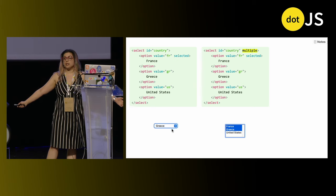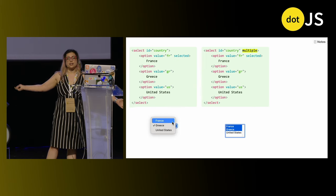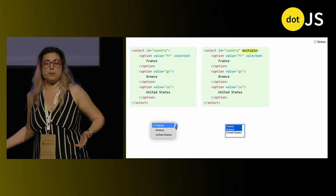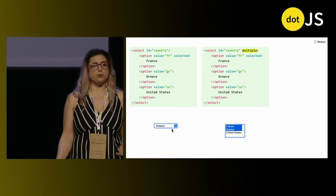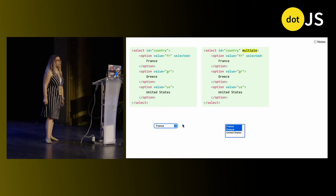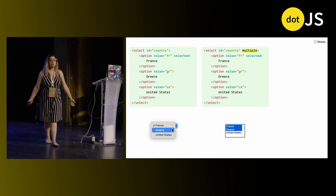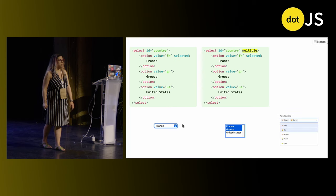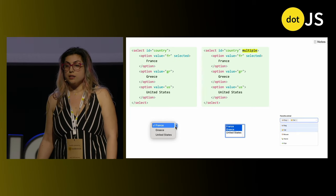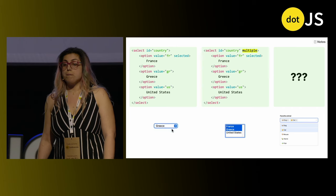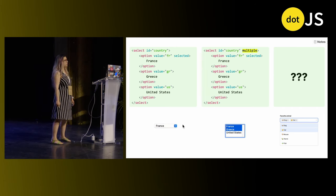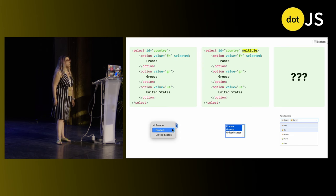Let's look at another example: the humble select menu. Are HTML elements APIs? Of course. Our components are also APIs. There are several issues — let's start from the first one. You can add a multiple attribute and turn it into a multi-select list box. But what if you wanted a multi-select dropdown? You can't do that. If you add multiple, it's turned into a list box.